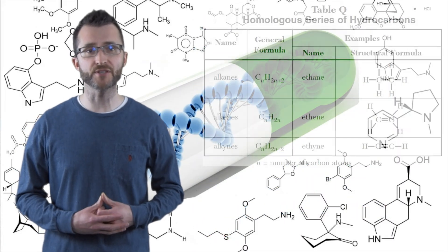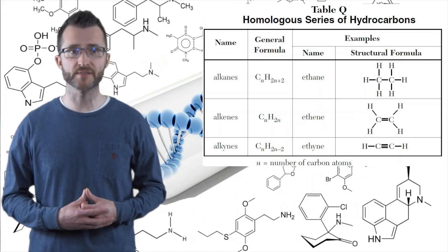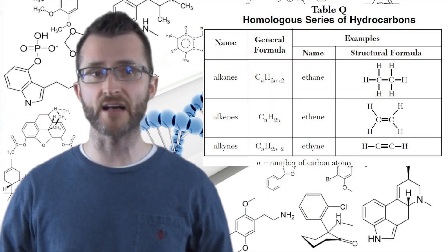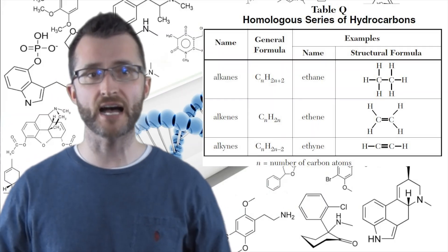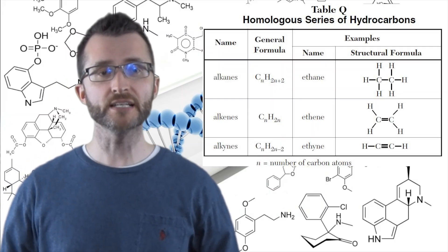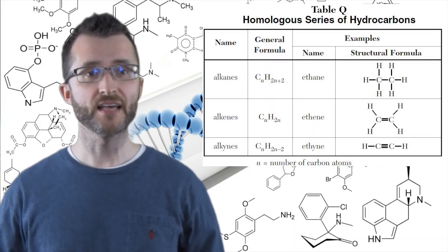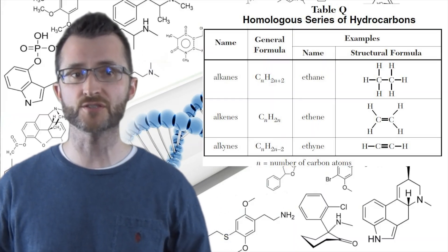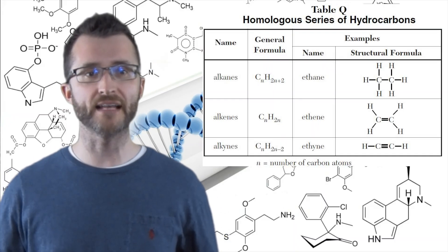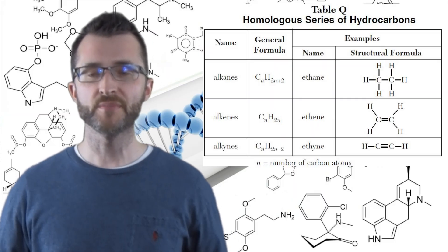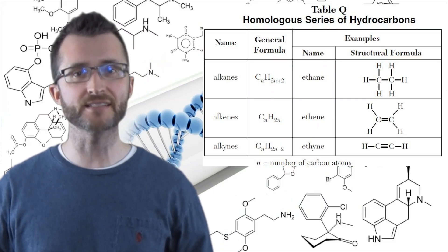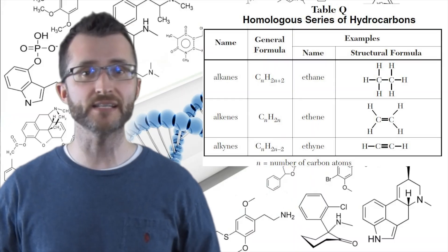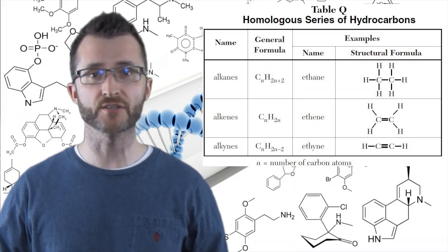Let's take a look at table Q, the homologous series of hydrocarbons. There are three different series: alkanes, alkenes, and alkynes. Looking at the alkanes, we see that they have the general formula CₙH₂ₙ₊₂, where N is the number of carbon atoms. Because alkanes have only single bonds, we consider them to be saturated hydrocarbons.